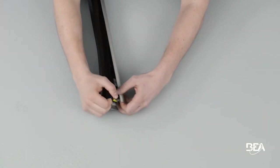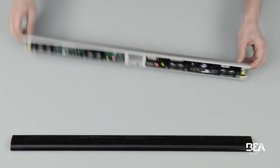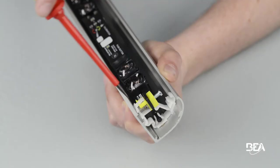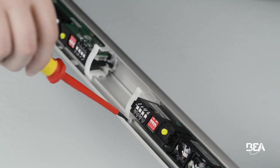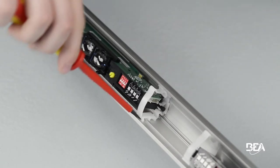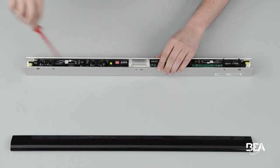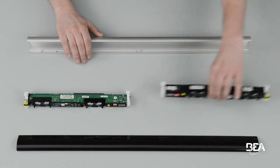First of all, remove the front lens to access the modules. To detach the module from the profile, insert a flathead screwdriver under the white clip and undo it using a levering motion. Do the same with the second clip, then take the module out of the profile.